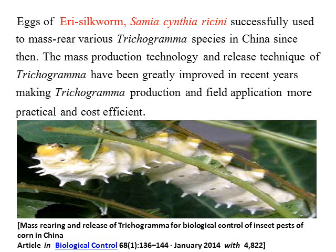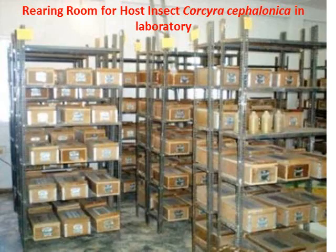Some scientists have worked on the eggs of Eri silkworm, Samia ricini, which is successfully possible to rear Trichogramma species on. The National Bureau of Agricultural Insect Resources at Bangalore also tried the eggs of the Eri silkworm for rearing of Trichogramma chilonis. Since the eggs of the Eri silkworm are much bigger in size than Corcyra eggs, it is very easy to lay more eggs within a short period of time.